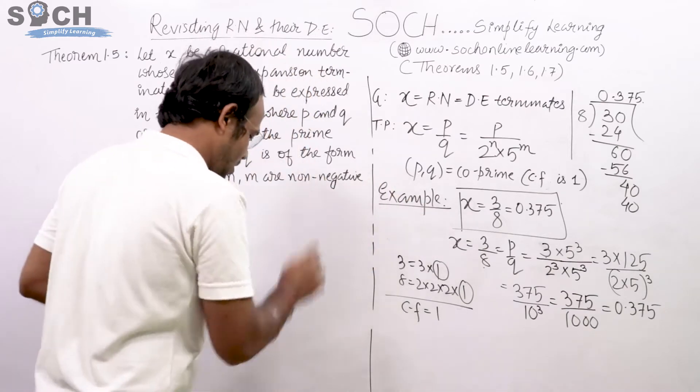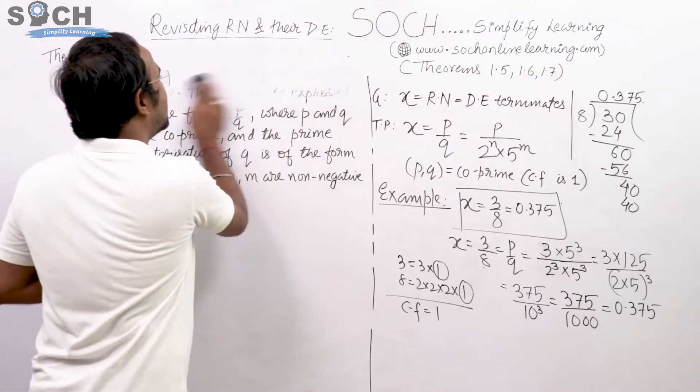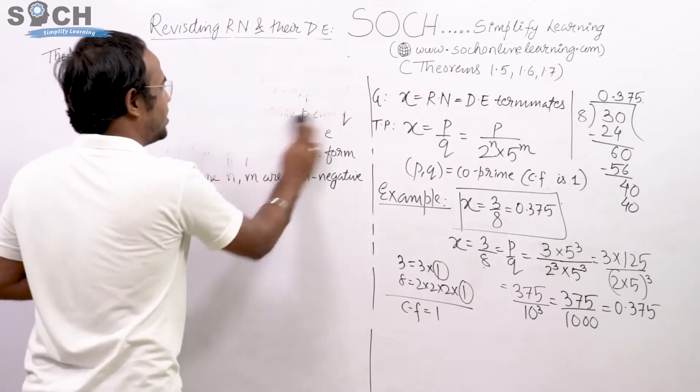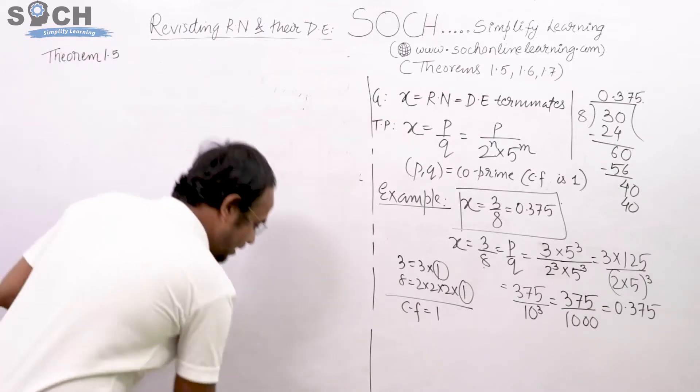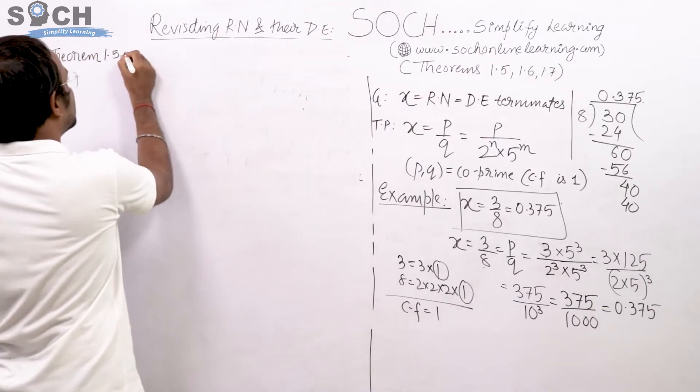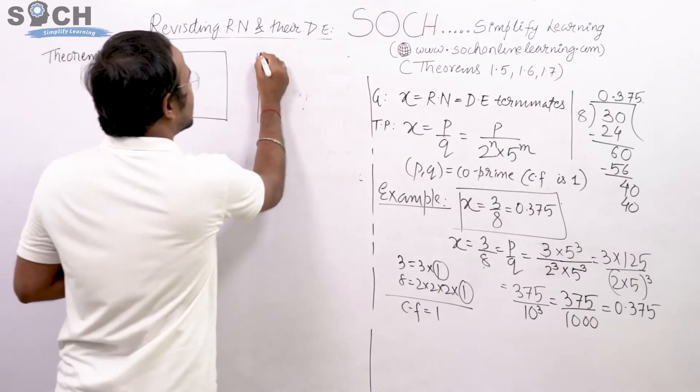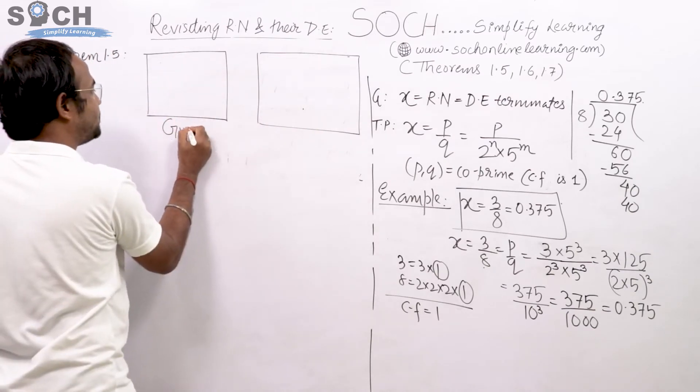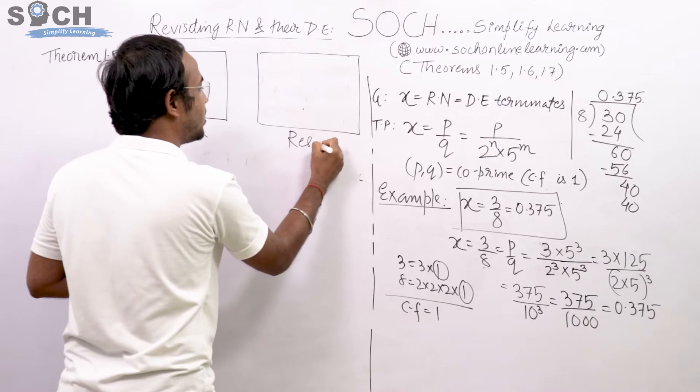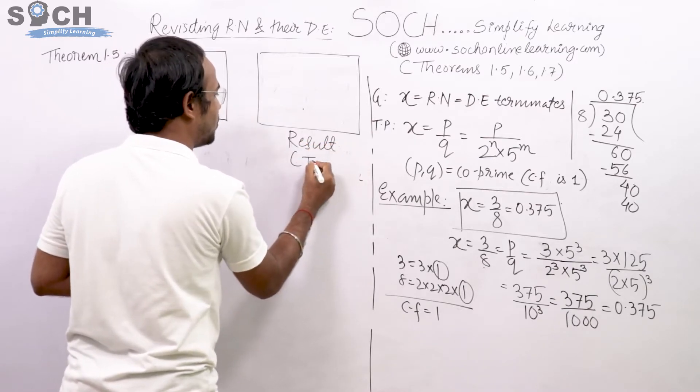In front of you, if I erase this whole theorem, then this whole theorem can be just remembered forever by using two boxes. One is the given box, one is the result box. So the two boxes suffice the whole theorem. First box is all about what? Given. And second is the result, which is to be proved.